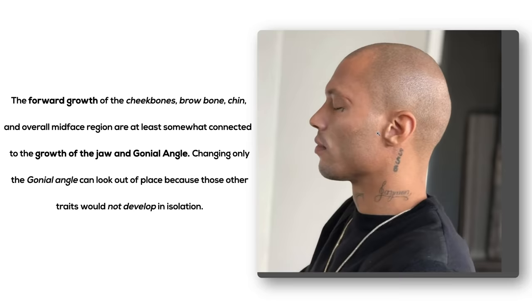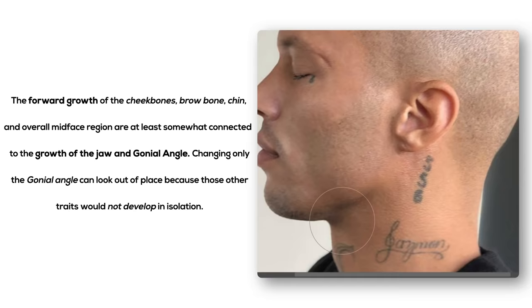An example of a hyper-masculinized morphology of the ramus and gonial angle is model and previously convicted felon Jeremy Meeks. After we round out his jaw, it makes a dramatic difference. Obviously these edits will not look entirely realistic — the forward growth of the cheekbones, brow bone, chin, and overall mid-face region are at least somewhat connected to the growth of the jaw and the gonial angle. Changing only the angle can look out of place because those other traits would not develop in isolation. Dentofacial growth and facial aesthetics come as a package.